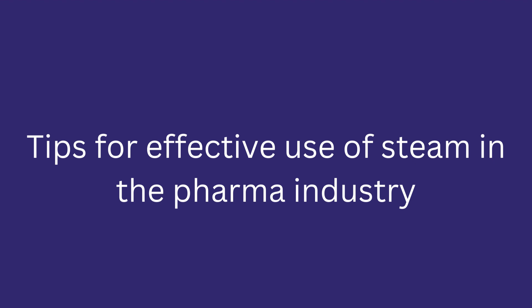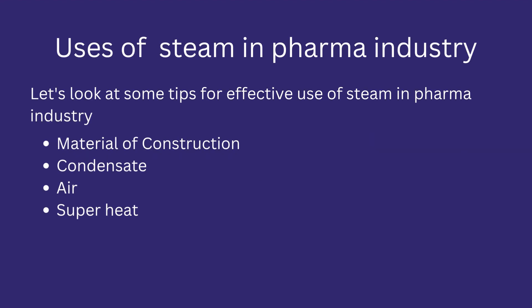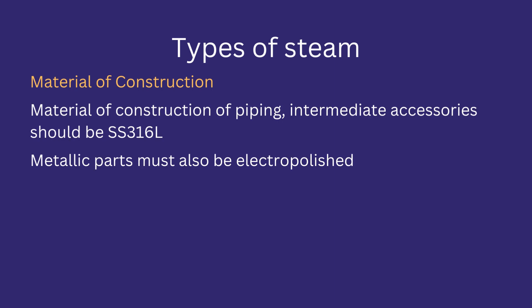Let's discuss some tips for the effective use of steam in the pharma industry. Some common areas that are helpful in determining the efficiency of steam include material of construction, condensate, air, and superheat. The material of construction of piping and intermediate accessories such as valves and fittings must be SS316L, as this prevents material degradation and prevents contamination in the steam flowing through it. Additionally, metallic parts must also be electropolished.